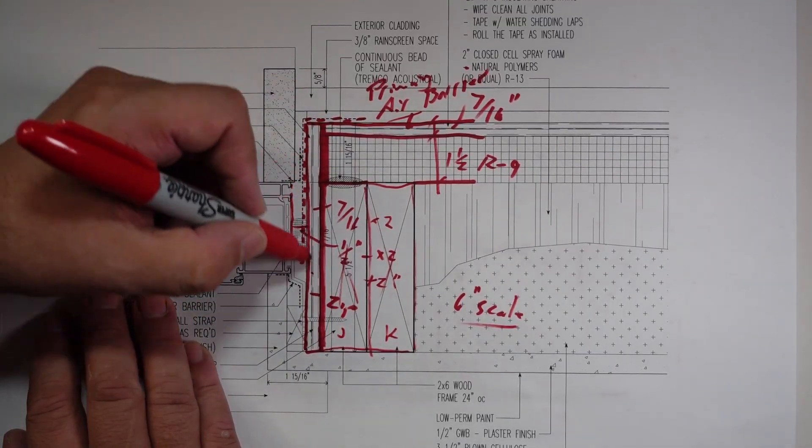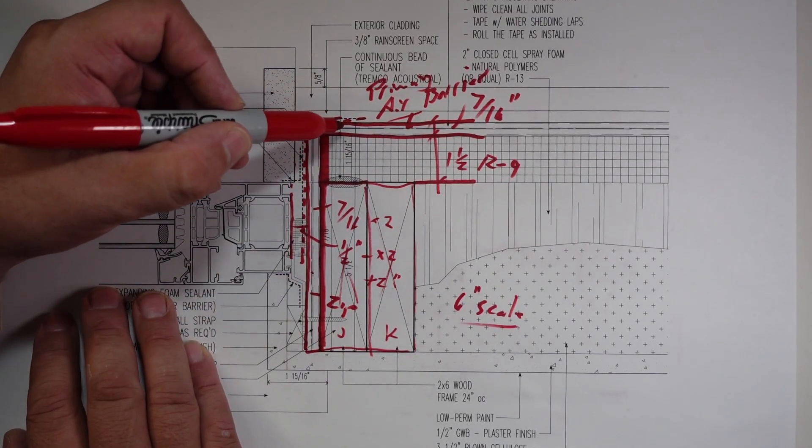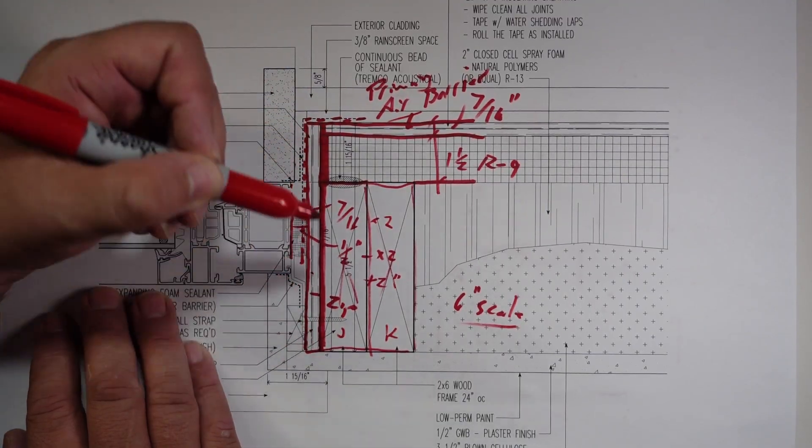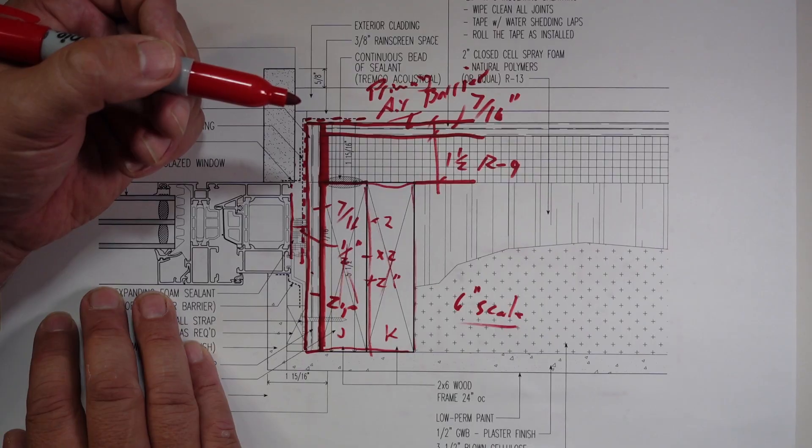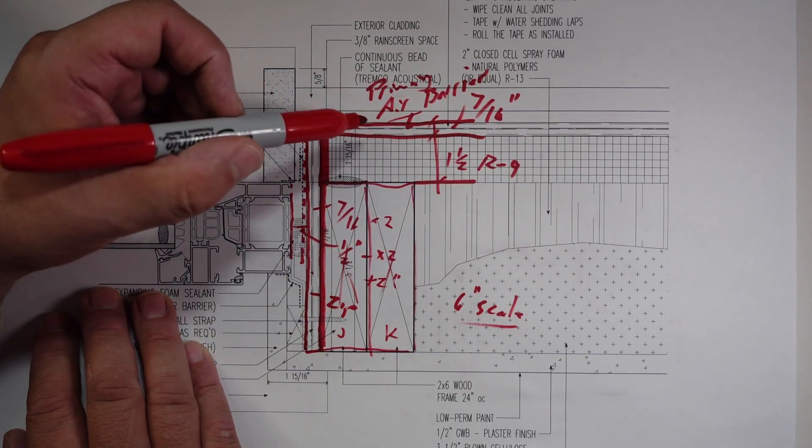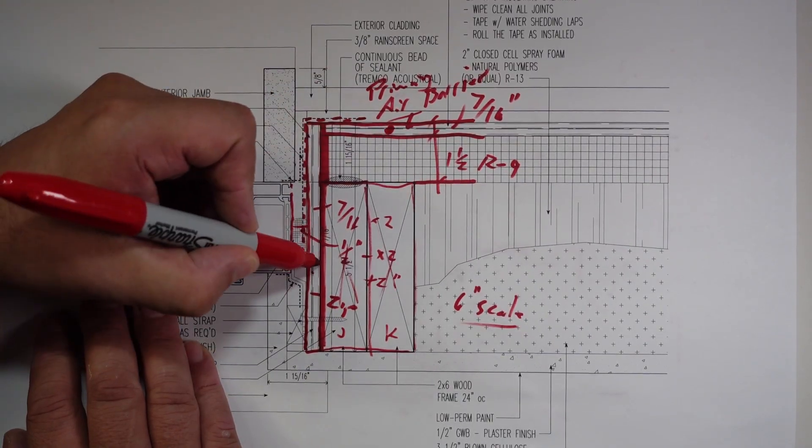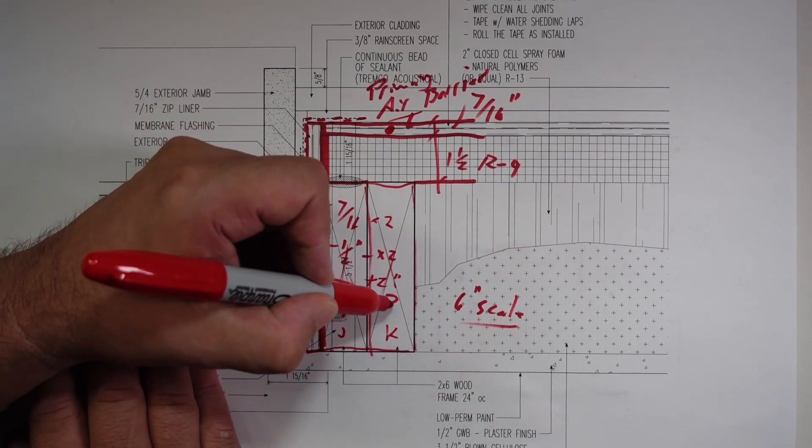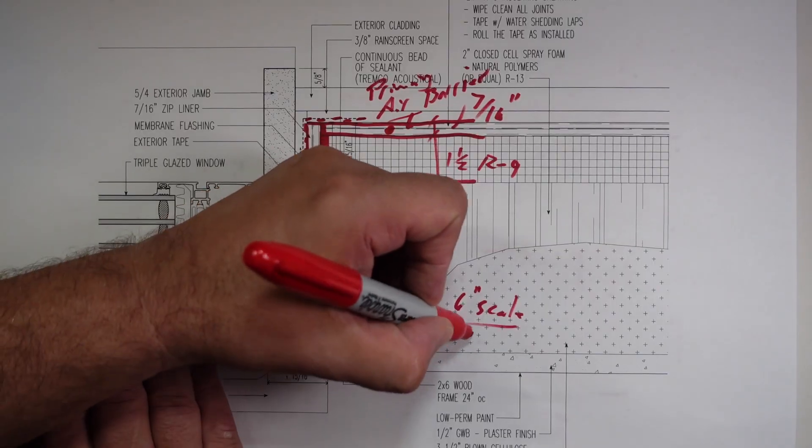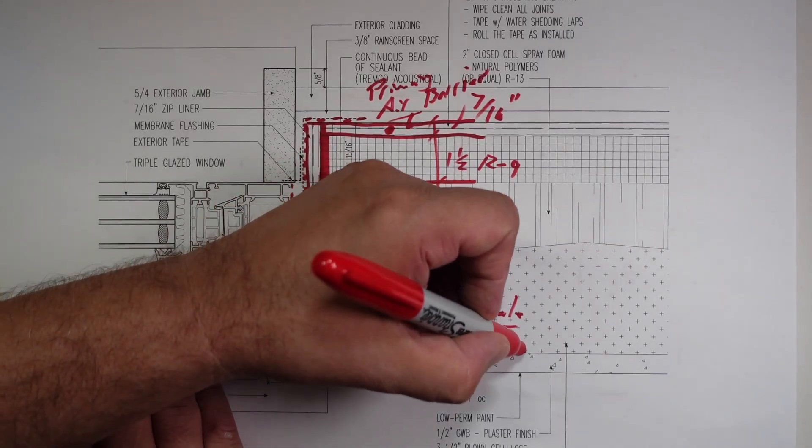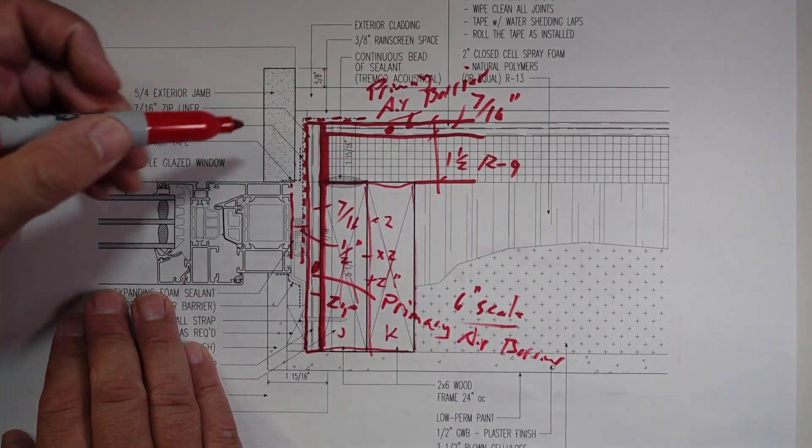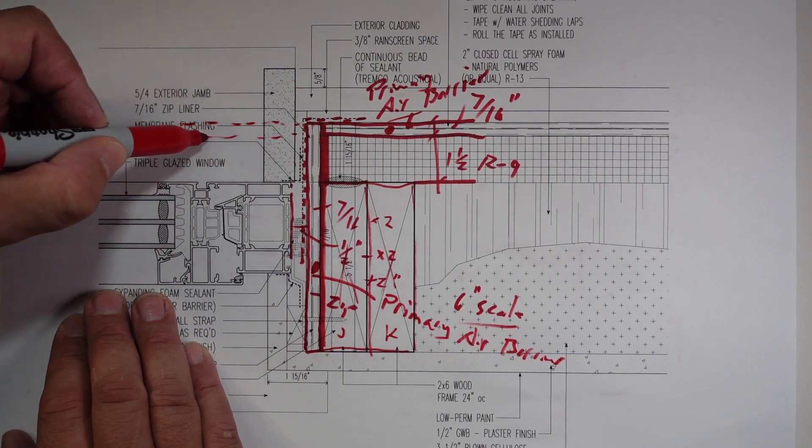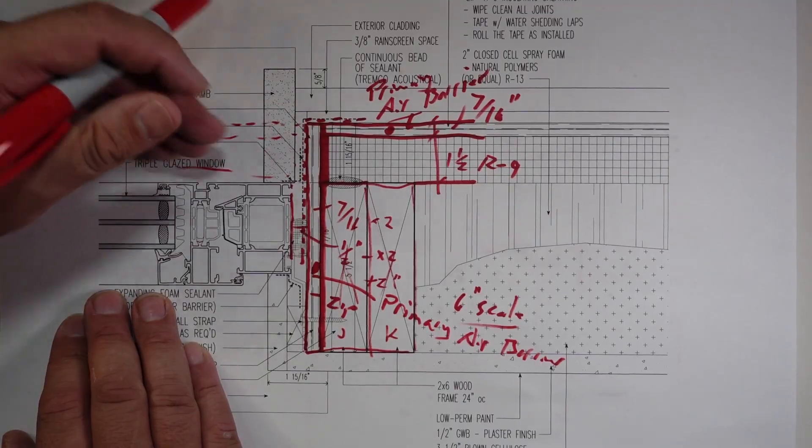But this 7/16 zip here is basically just an extension of our primary air barrier on the outside. We're turning the corner. If you remember in days gone by where we'd have house wraps or whatever and we cut them and then fold them in, I'm doing the same idea but here, rather than it being a paper or membrane, we're actually folding in the hard material of that 7/16 inch zip.